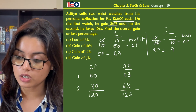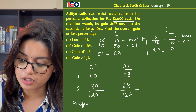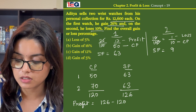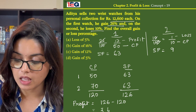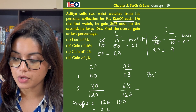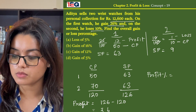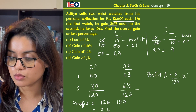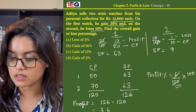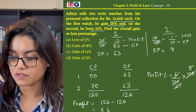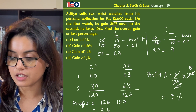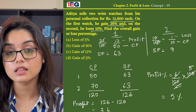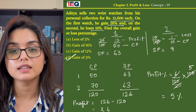Profit then becomes 126 minus 120, that is Rs 6, and the profit percentage is 5%. The answer to this question is option D.